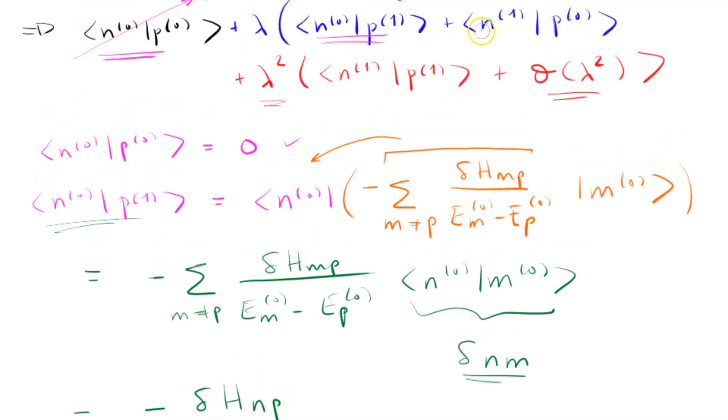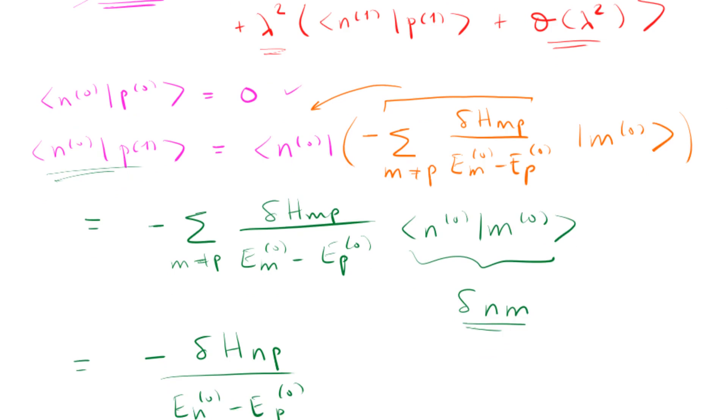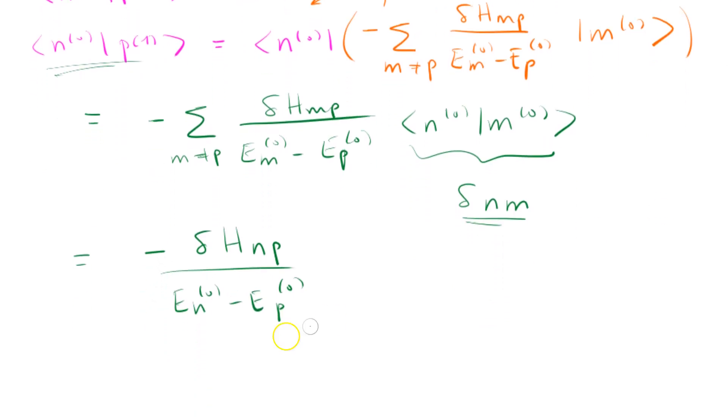So now we have to calculate this term here, N1, P0. And if you notice, N1, P0, is nothing more than P0, N1, complex conjugate. Because when you complex conjugate an inner product, you change the bra with the ket. And this inner product is nothing more than, actually, we don't even need the sum, because let's do this shortcut right away. This matrix element is nothing more than negative delta H, P, N, over E, P0 minus E, N0. Just using our standard formula.